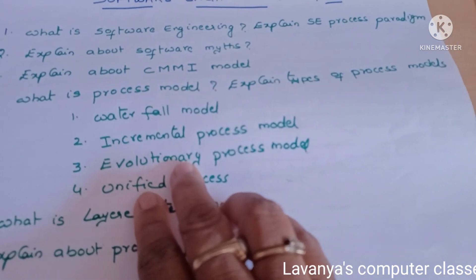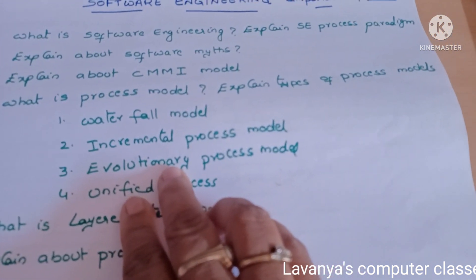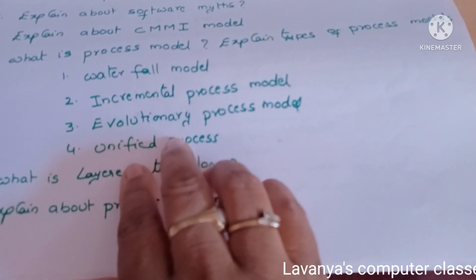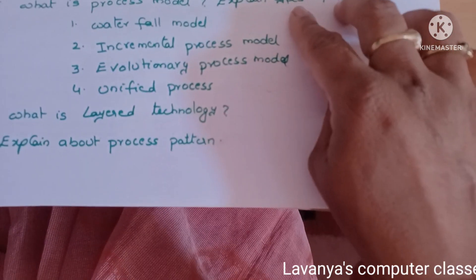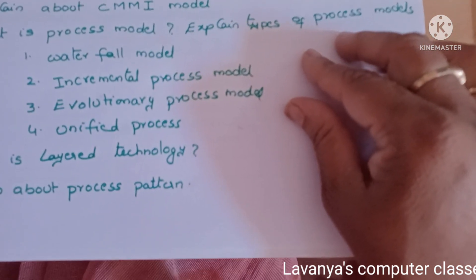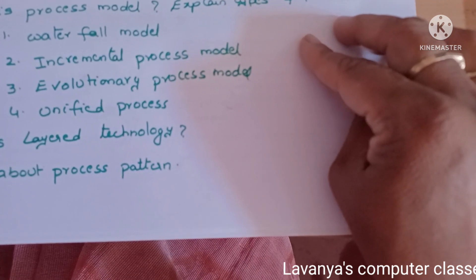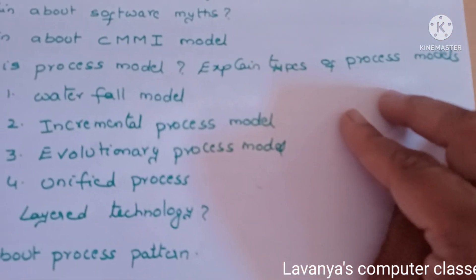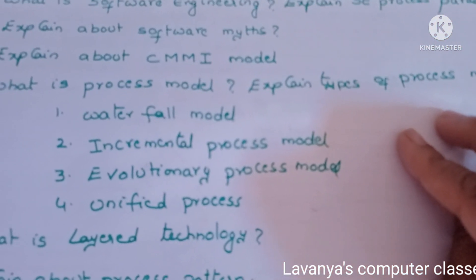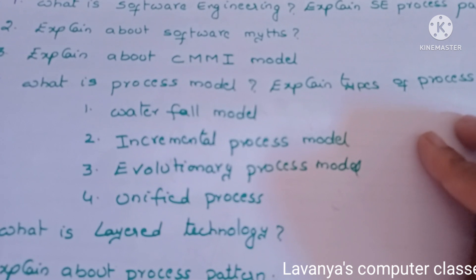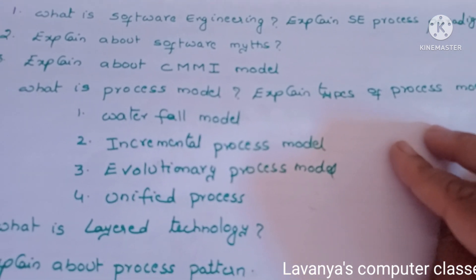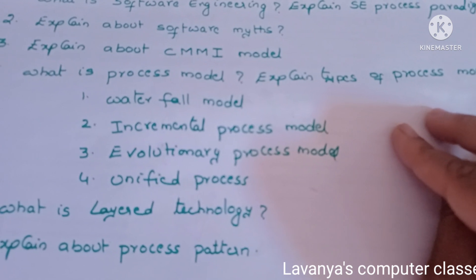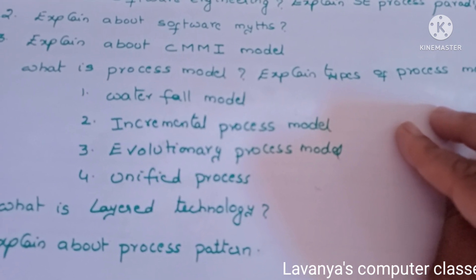The fourth question is what is a process model? Explain the types of process models. There are four models: waterfall model, incremental process model, evolutionary process model, and unified process model. They are asking individually also — explain the waterfall model with its advantages and disadvantages, or explain the incremental process model with advantages and disadvantages. They ask in any manner, so read what is process model.